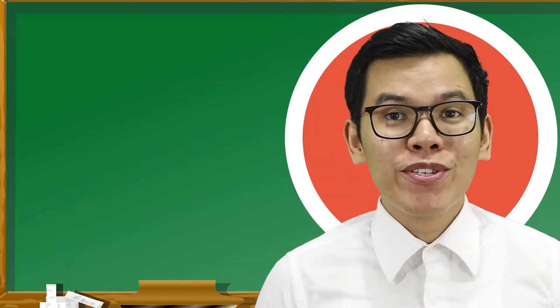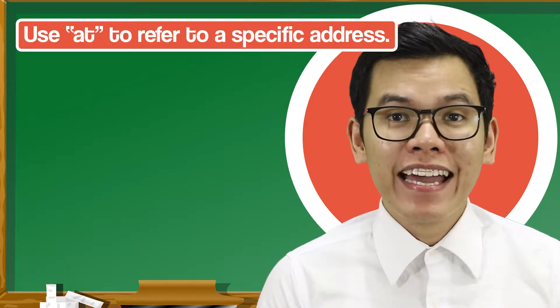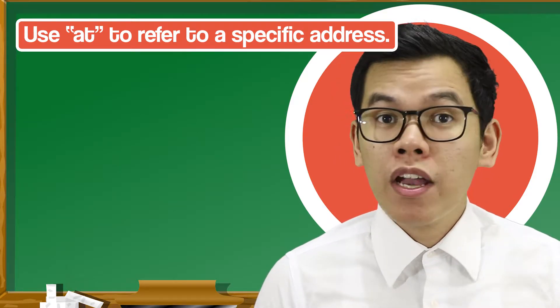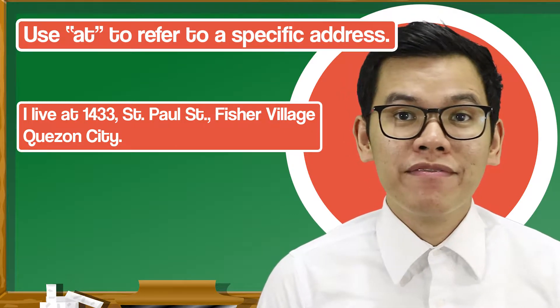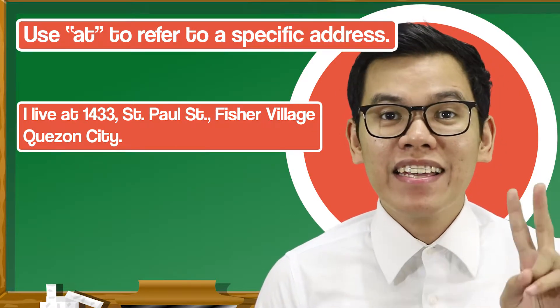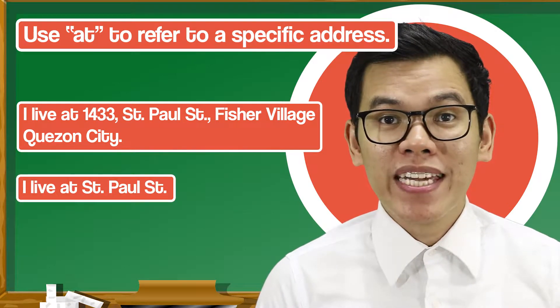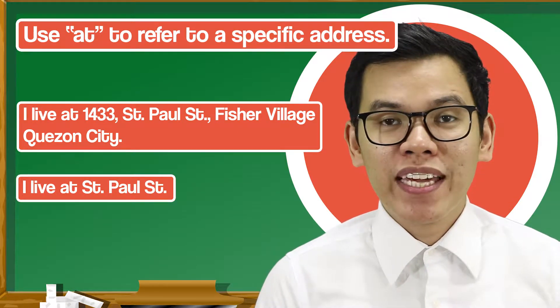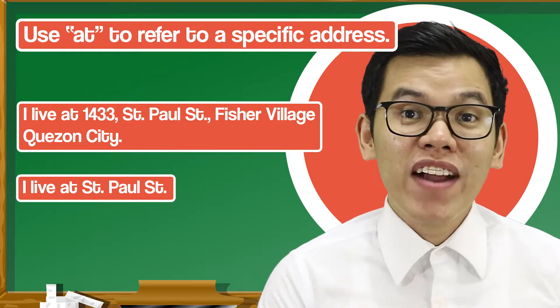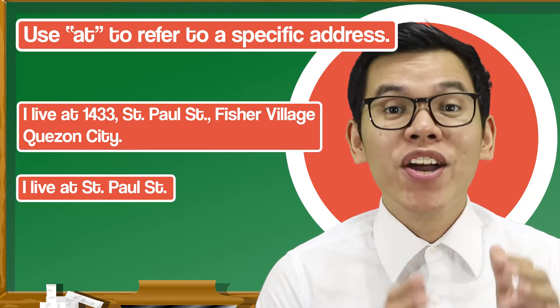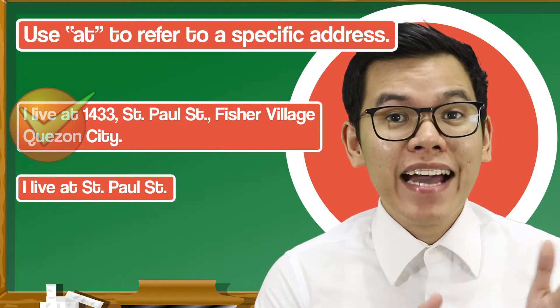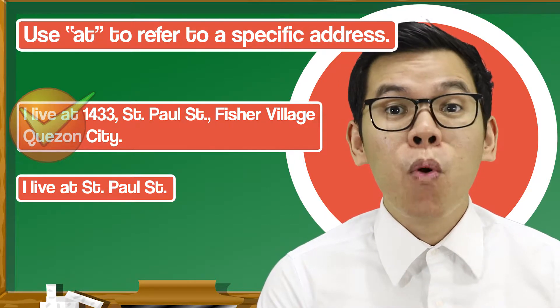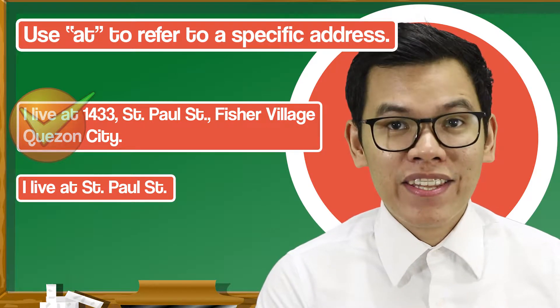Let's talk about using 'at' to denote place. The first rule is we use 'at' to denote a specific address. For example: 'I live at 1433 St. Paul Street, Fisher Village, Quezon City' versus 'I live at Simple Street.' The first sentence is correct because the address is more complete than in the second sentence.